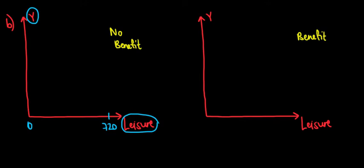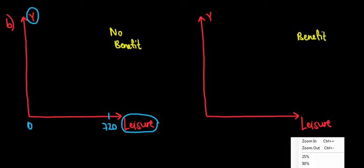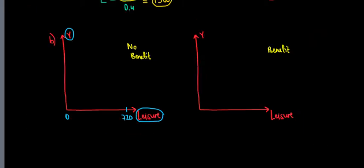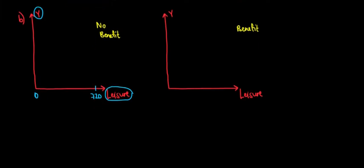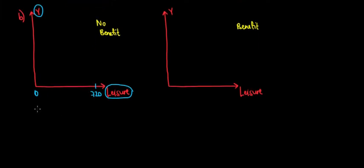The other question is: what's the Y-intercept — the maximum amount of money we could be earning? We know we make 10 euros per hour and there are 720 hours in total. So 720 times 10 would be 7,200 euros of maximal earnings. That would be the Y-intercept: the most money we could make.